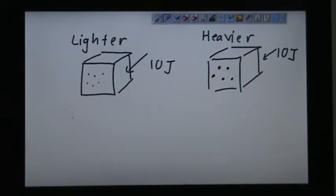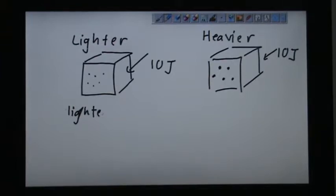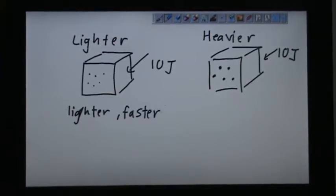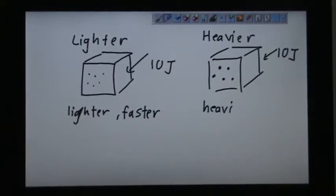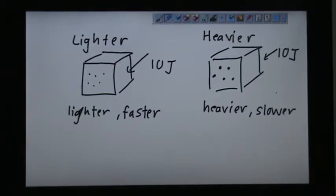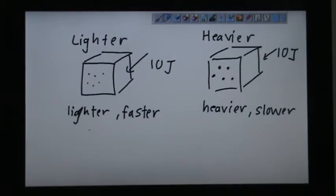So the lighter particle actually can travel faster. Lighter particle actually travel faster. But the heavier particle actually travel slower. Why is this so? So if we think of this mathematically, there is logic in it.